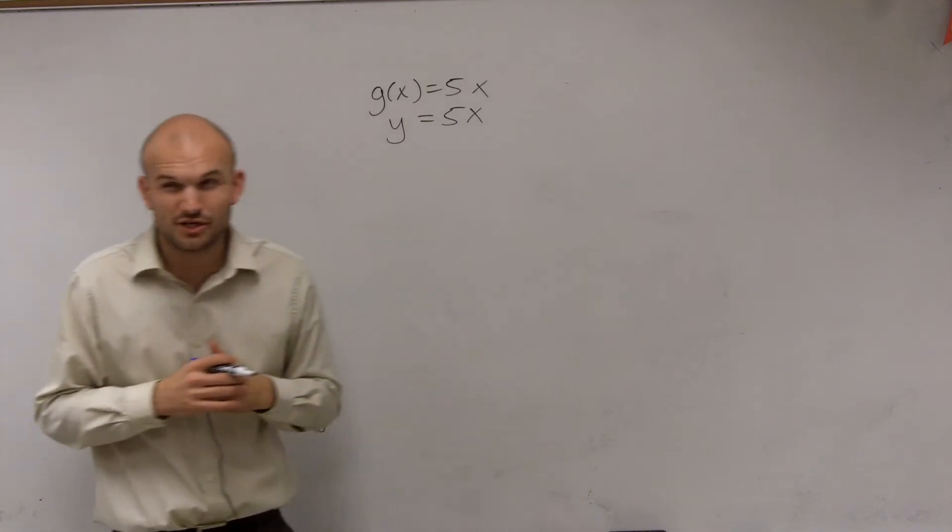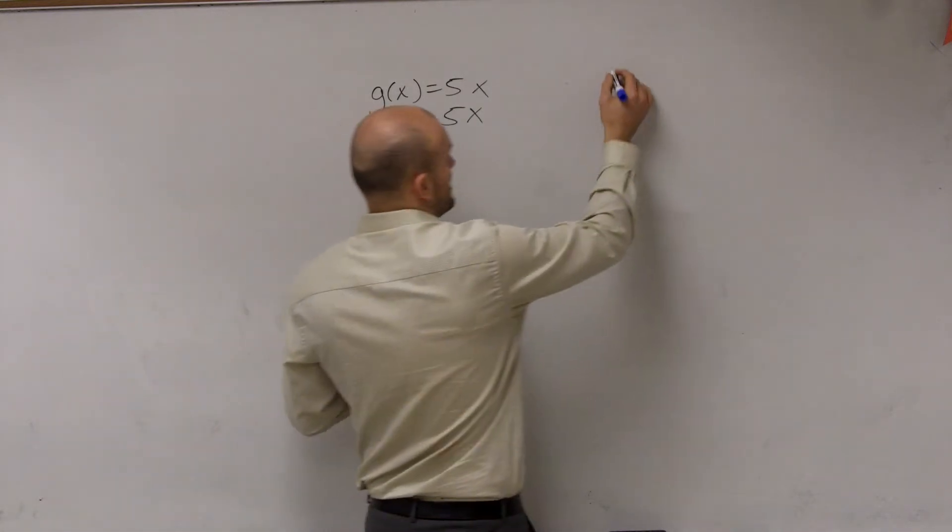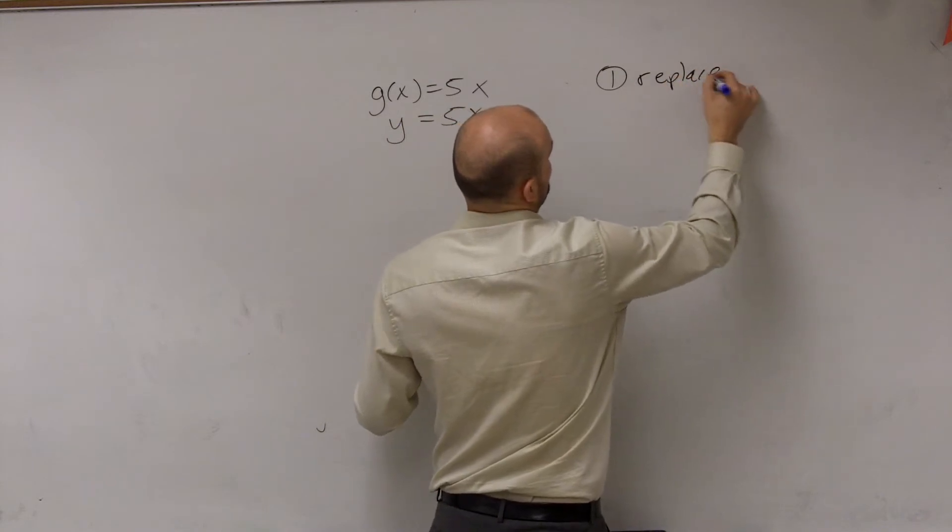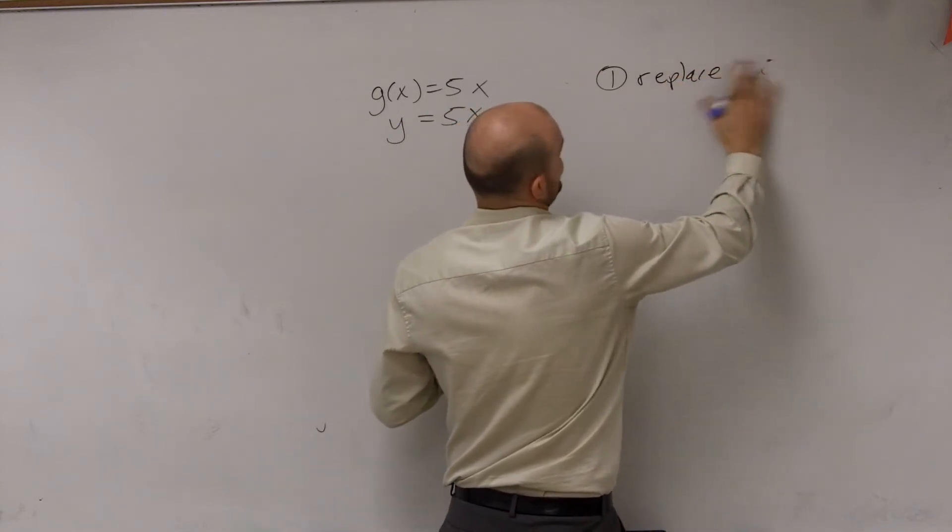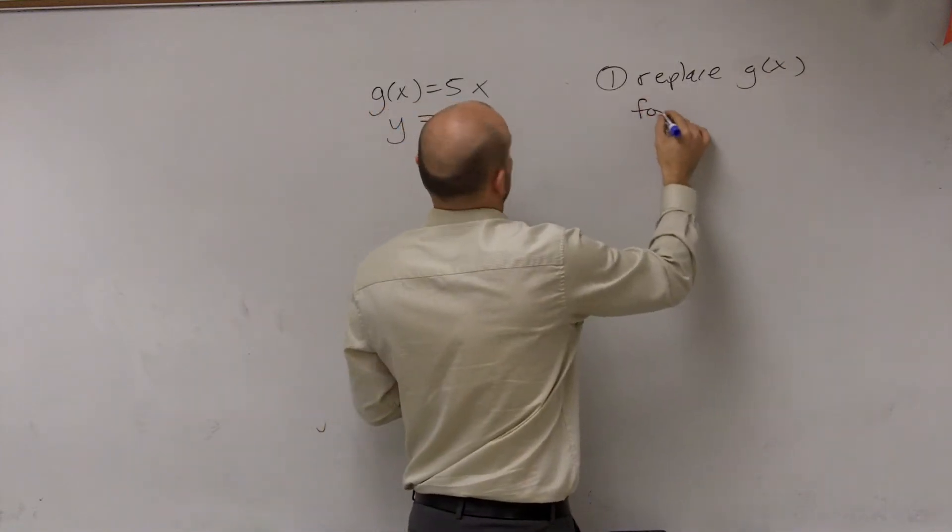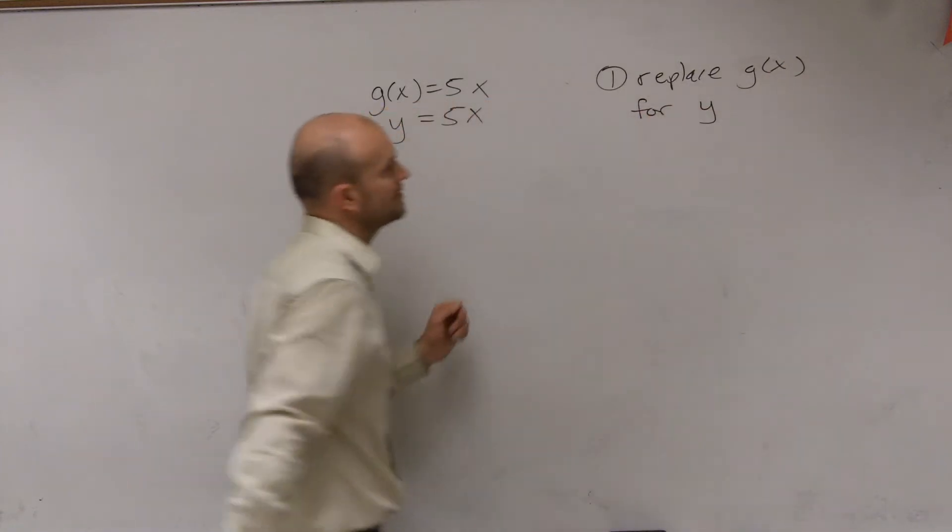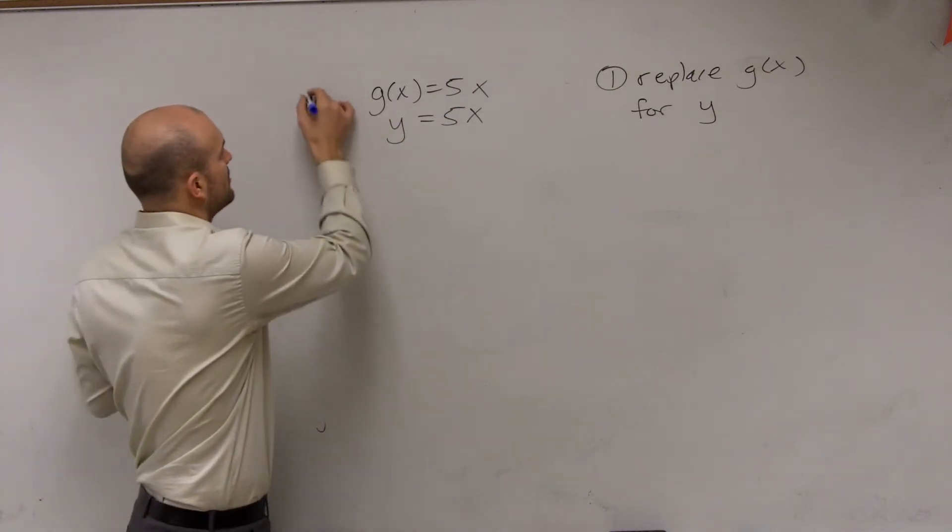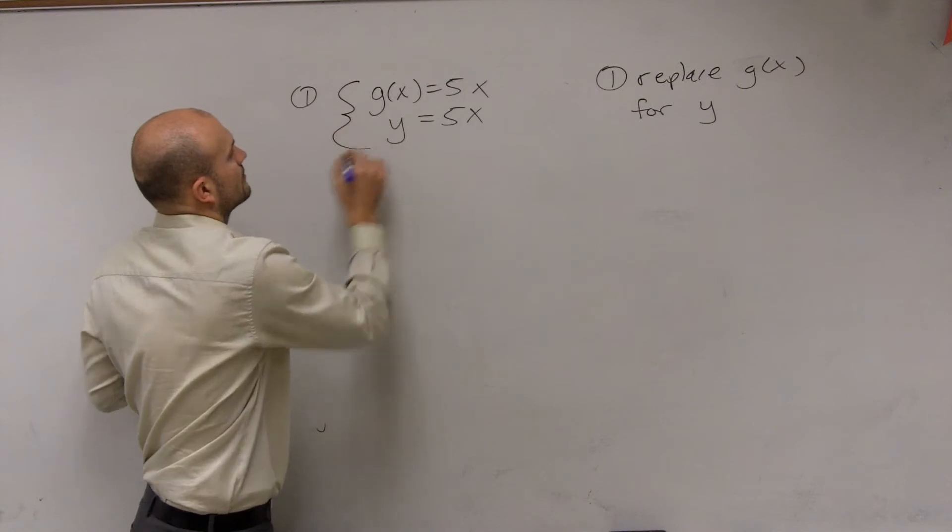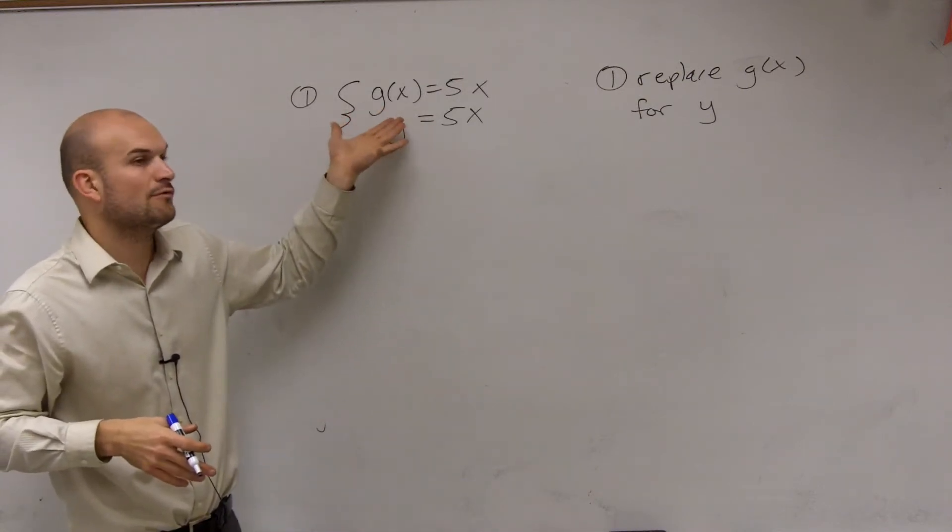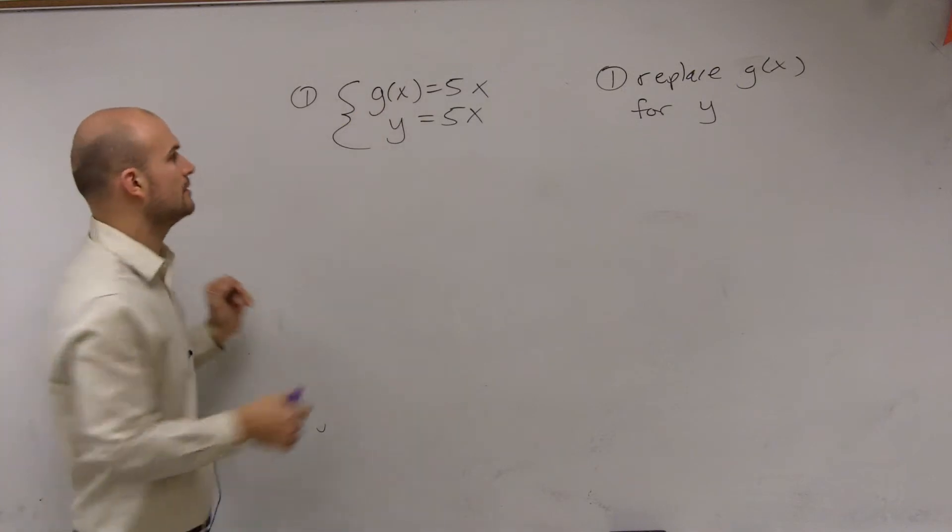So if I'm going to tell you to find the inverse, I'm going to give you guys a couple steps. Step number one: replace your—in this case is g(x), it doesn't matter whatever your function name is—replace g(x) for y. So that's the first step, just replace it. You're only going to have it once, so just replace it for y.